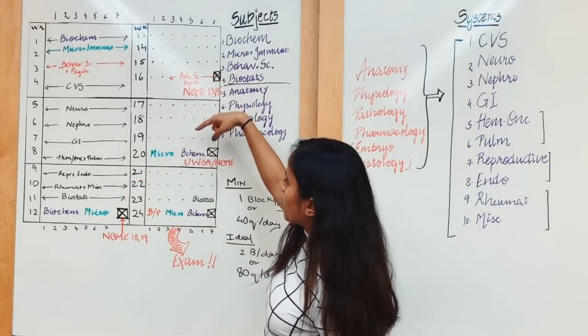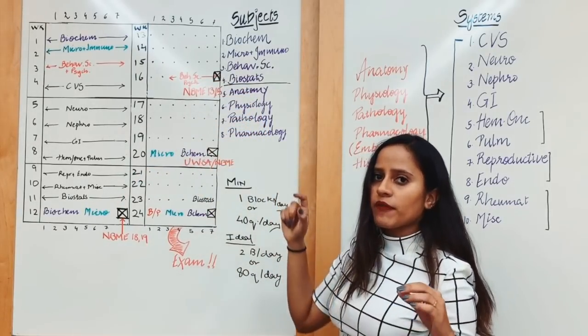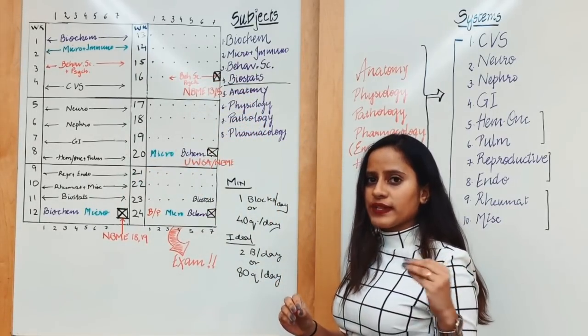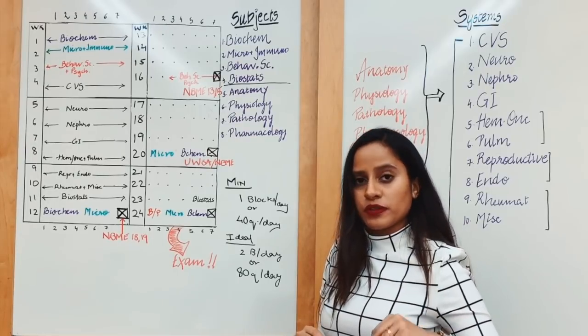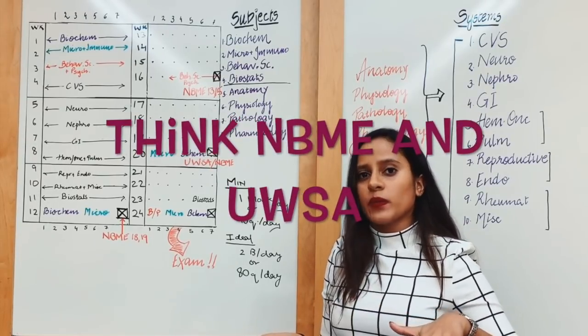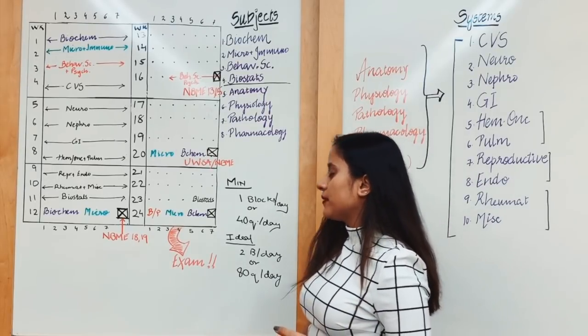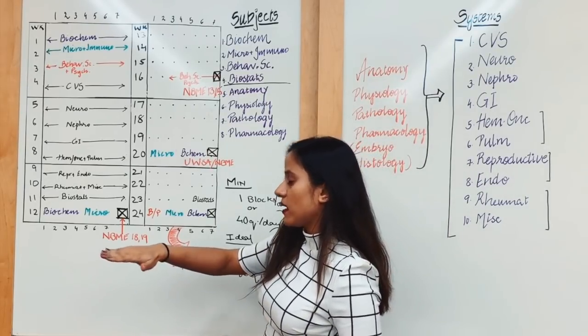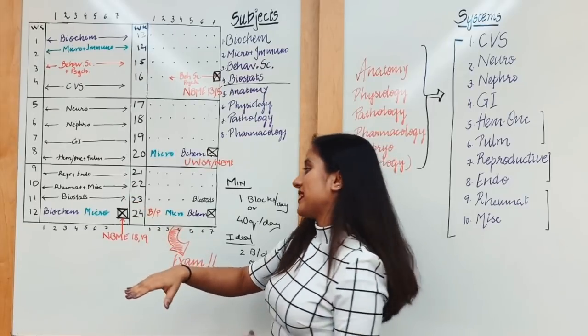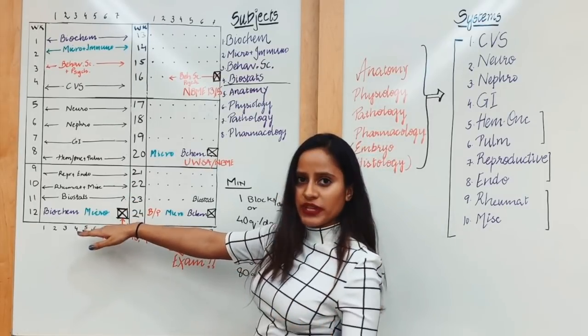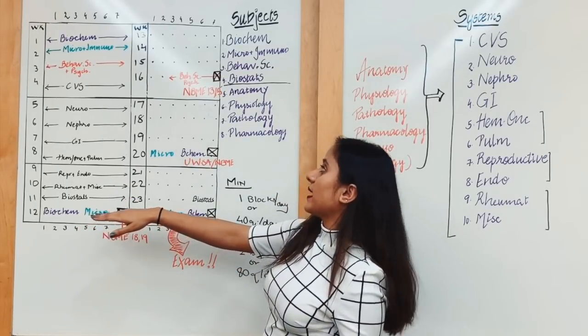The months are divided as one, two, three, four, five, and six. We first need to know what kind of self-evaluation method we would want to use. The most standard way of self-evaluation is to take NBMEs. I would suggest taking two NBMEs at the end of your first three months of revision.